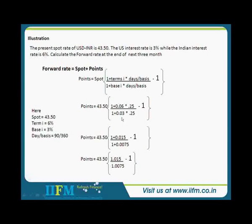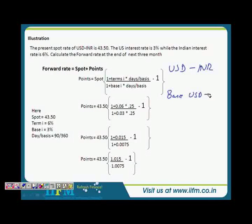Let's take this example. The prevalent spot rate is 43.50 for USD-INR. The US interest rate is 3% while the Indian interest rate is 6%. In our example, our base currency is US dollar, so our base_i would be 3%. Let's take this slowly.